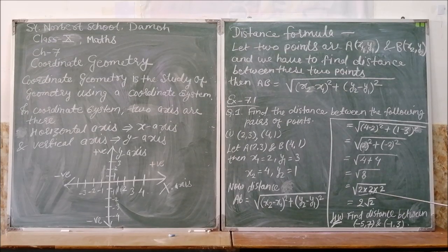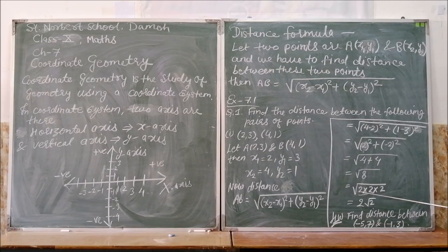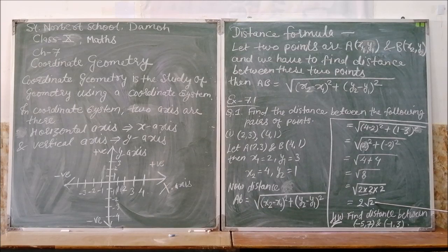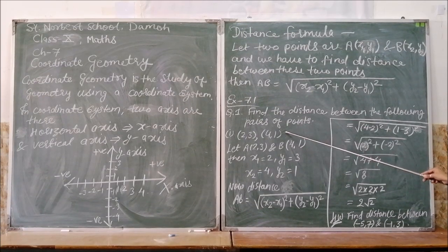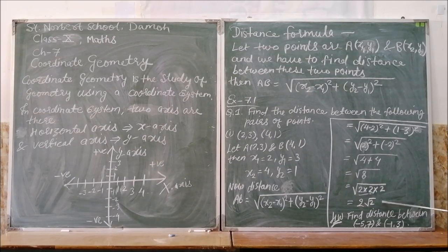In the next step, we will factorize this 8 in terms of 2 × 2 × 2. So these 2 times 2 become 2 square, and square and under root will cancel out. So this becomes 2 times root 2. Therefore, the distance between these two given points will be 2 root 2 units.